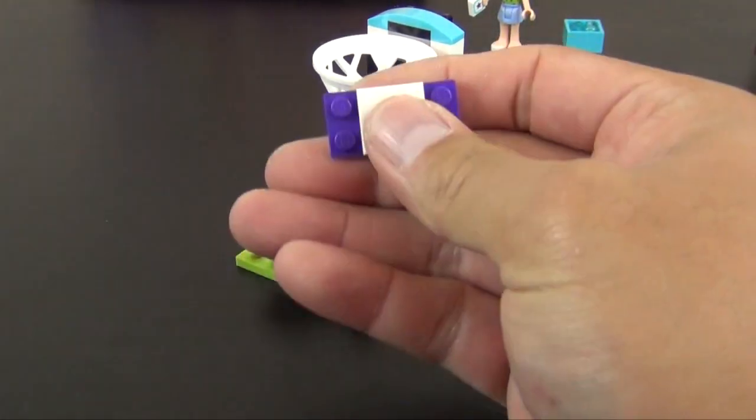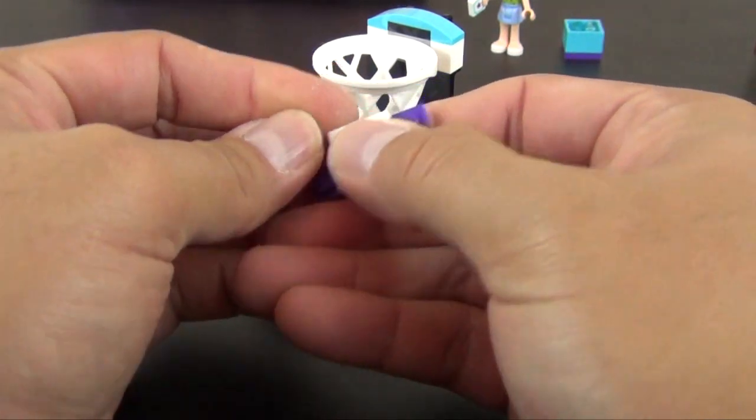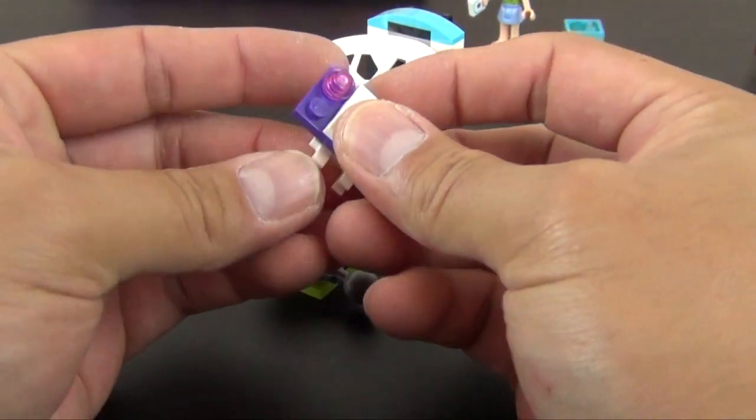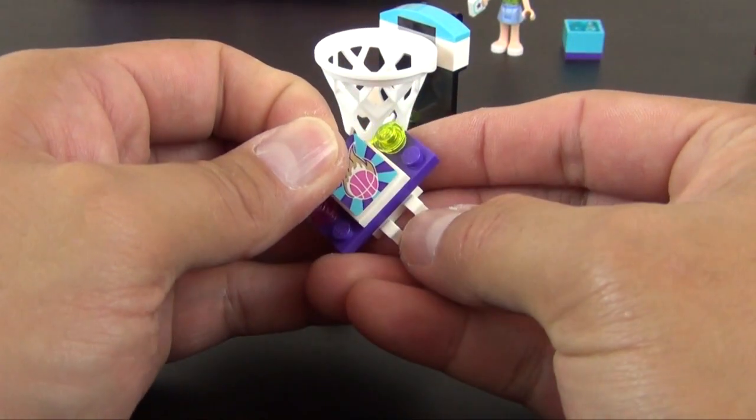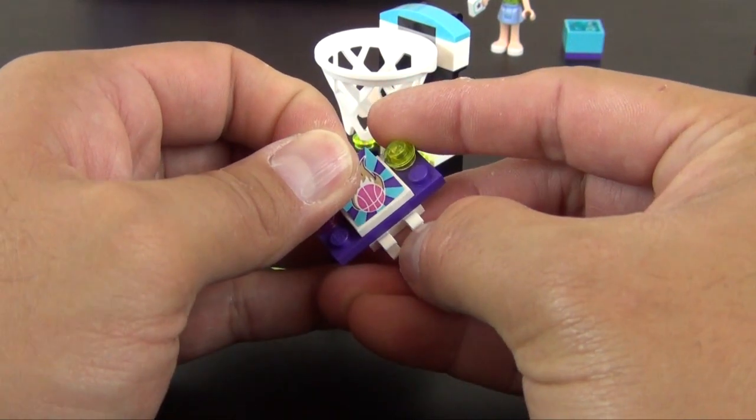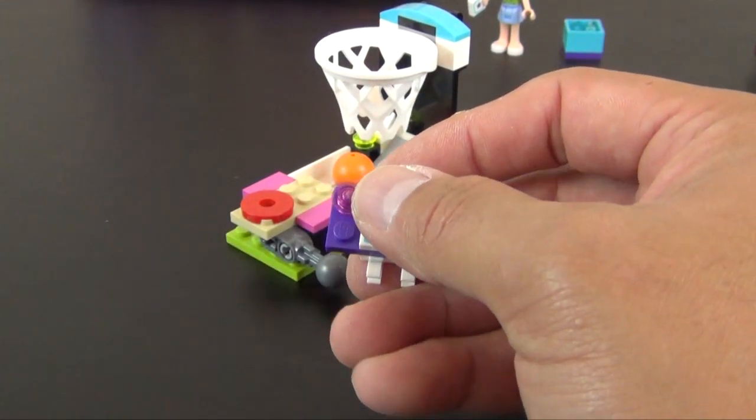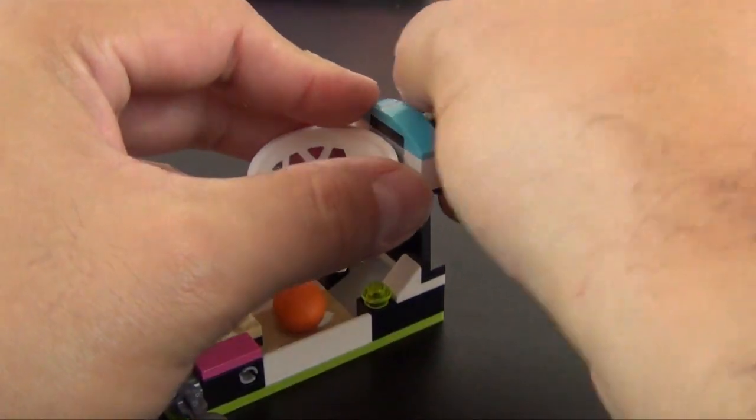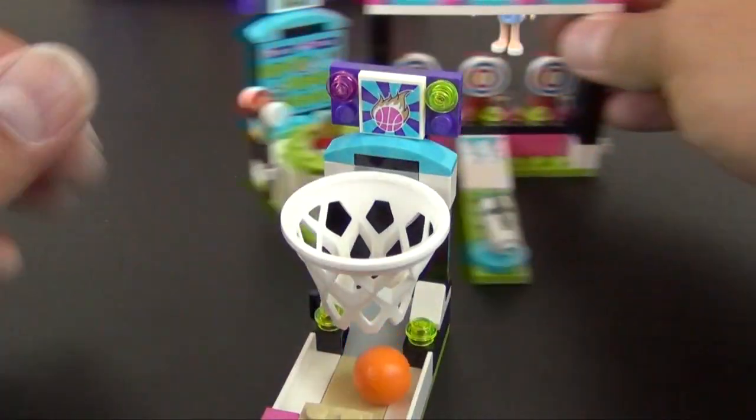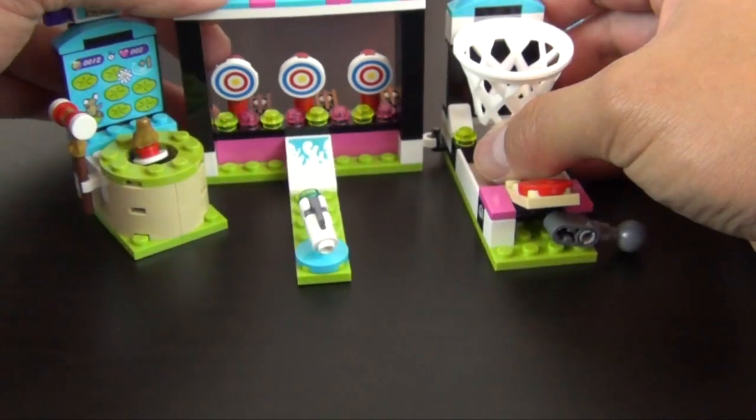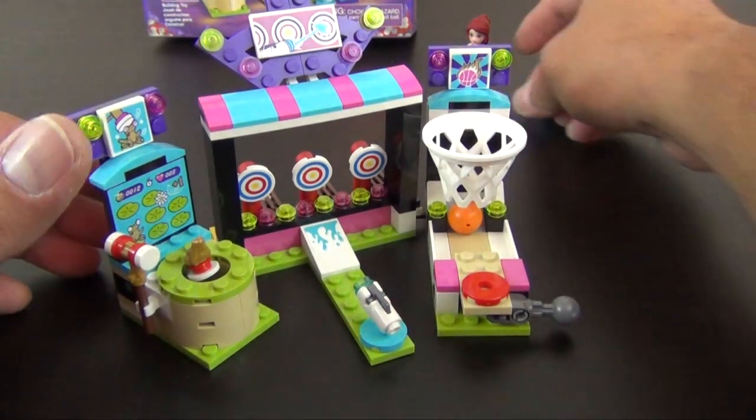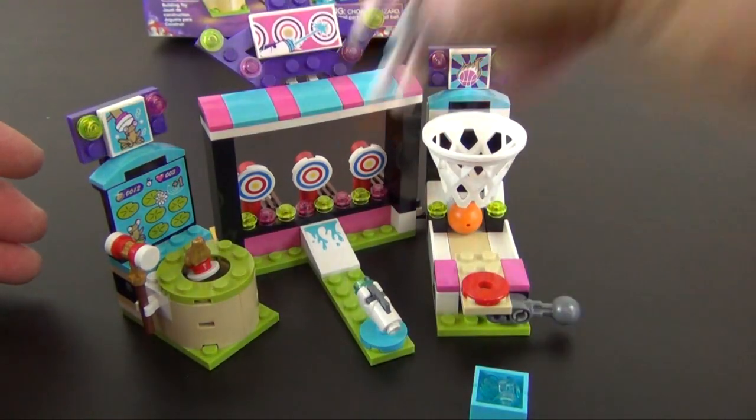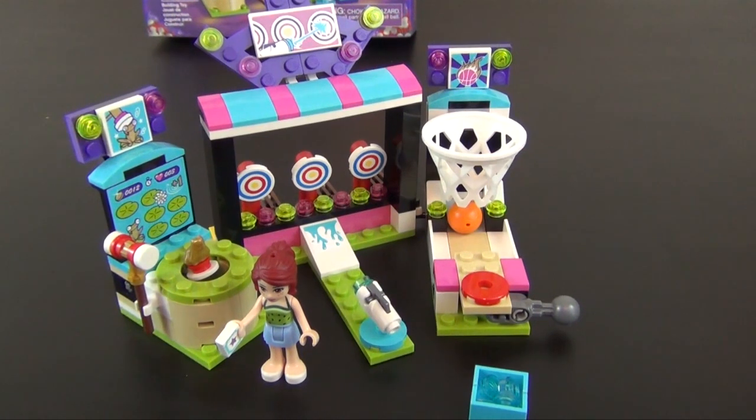So now we have our last little sign, some simulated lights, that's our last sticker. Put this back there. Bring this over, that clicks there. Check that out. That completes the build of the Lego Friends Amusement Park Arcade.